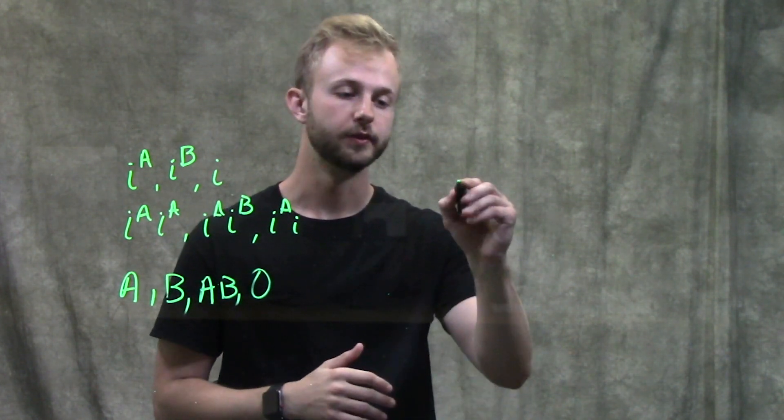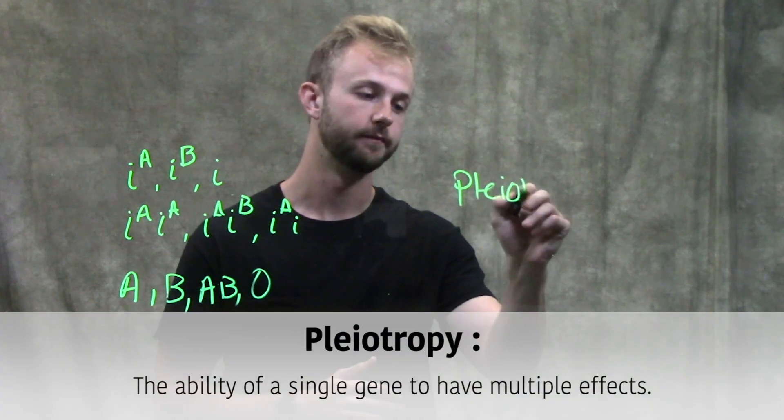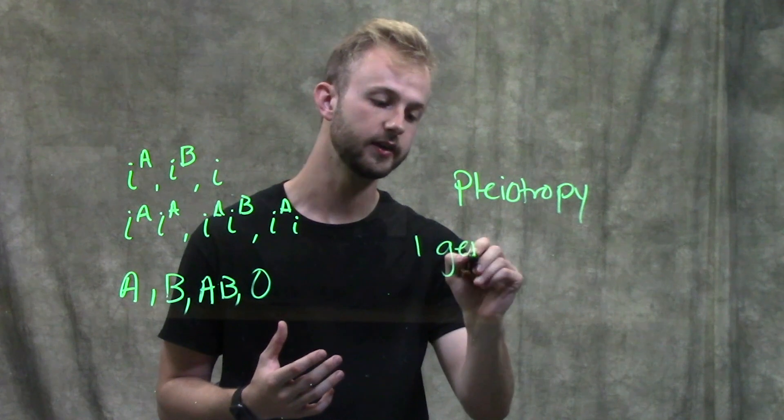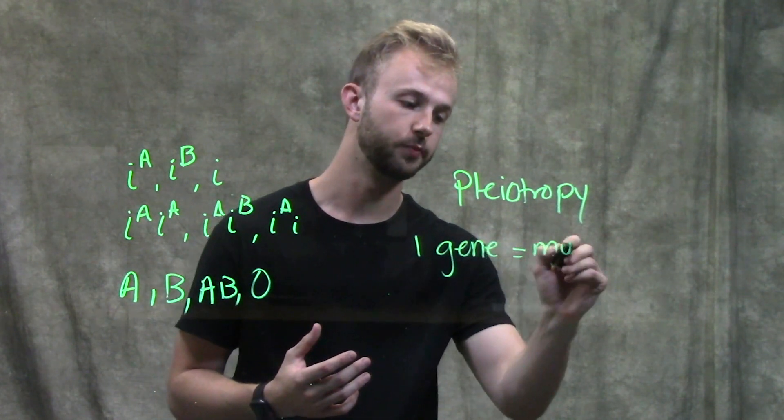So moving on to the second factor, which is going to be pleiotropy. So in pleiotropy, we have one gene, but multiple effects.